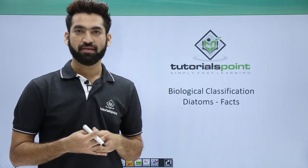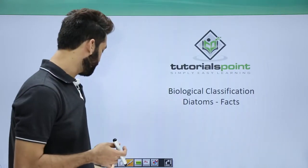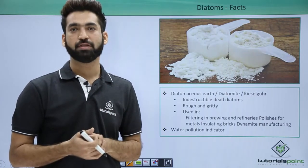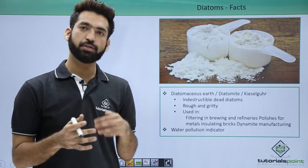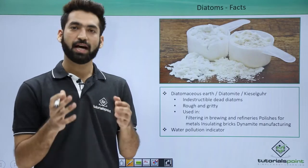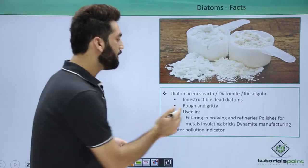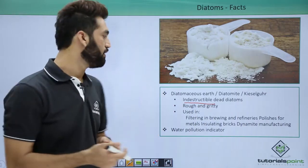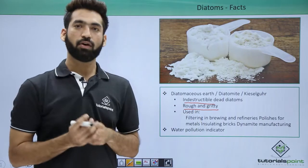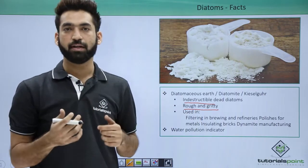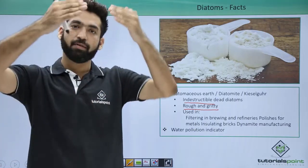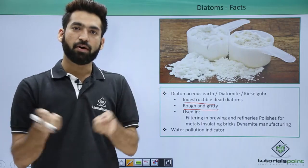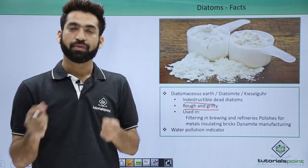In this session we'll be detailing some important facts related to diatoms. Diatoms have a cell wall made up of cellulose, but apart from cellulose they also have silica in their body. When they have silica in their body they become indestructible — meaning they cannot be destructed — and they become rough and gritty. Because they are present in oceans, when they die they keep on depositing in the lower layers of oceans or water bodies.